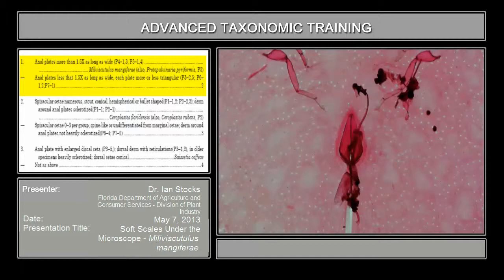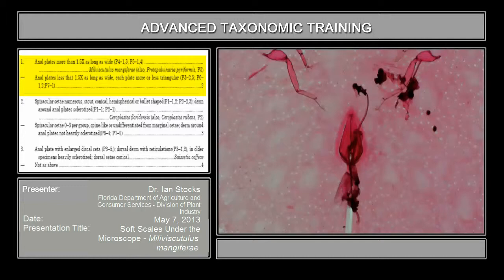The first statement in the key says: anal plates more than one and a half times as long as wide. So for this case, you're going to take basically this length here — the length of the anal plates compared to the width of the anal plates — and form an aspect ratio. This has got a fairly high aspect ratio; it's not really a simple triangle forming a quadrate structure. This is very exaggerated. So this corresponds to plate four, figure one, and figure three.